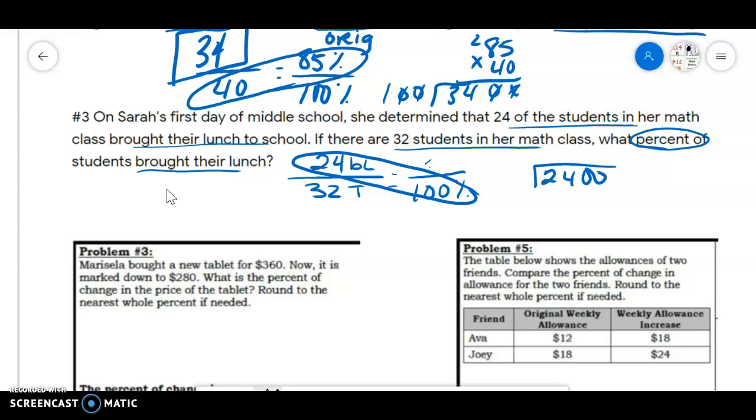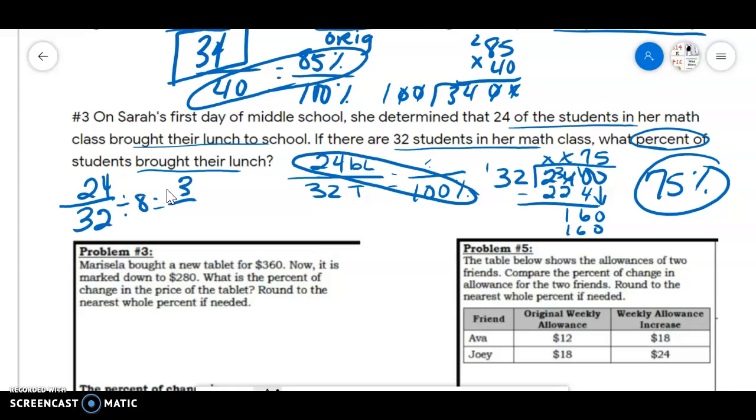So we can cross multiply. 24 times 100 is 2,400 and divide by 32, which is going to be 75. So we needed to say 75% here. The other way you could have done this is you could have written your 24 over 32, simplified that by 8 and gotten 3/4, and then easily changed that to a percentage. So lots of ways you could have done that problem.